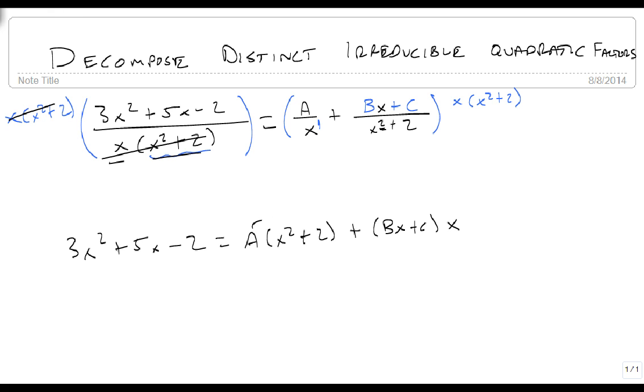Now all I need to do is distribute. So 3x squared plus 5x minus 2 equals Ax squared plus 2A plus Bx squared plus Cx.